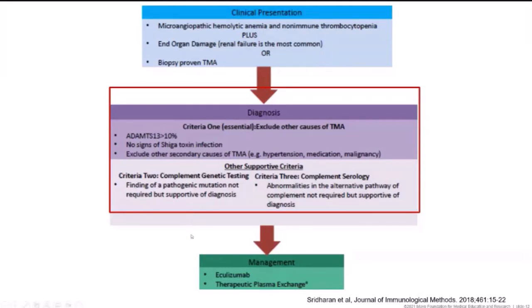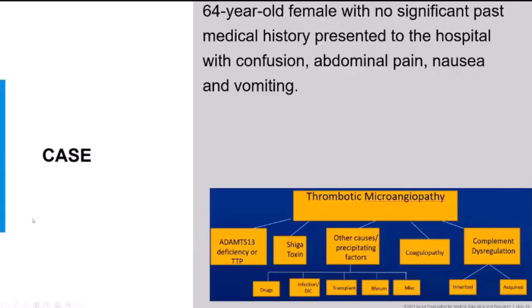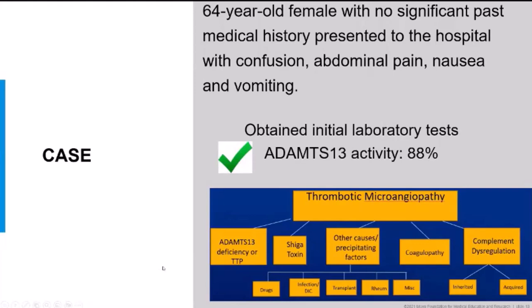When I see a TMA patient I work through the broad differential. The first step in diagnosing complement-mediated TMA is excluding other potential causes — there is no pathognomonic test. TTP must be urgently excluded, so we order an ADAMTS13 level. Typical HUS is considered if there is a bloody diarrhea prodrome. In this patient, ADAMTS13 was normal, ruling out TTP, and there were no secondary conditions to explain the TMA.